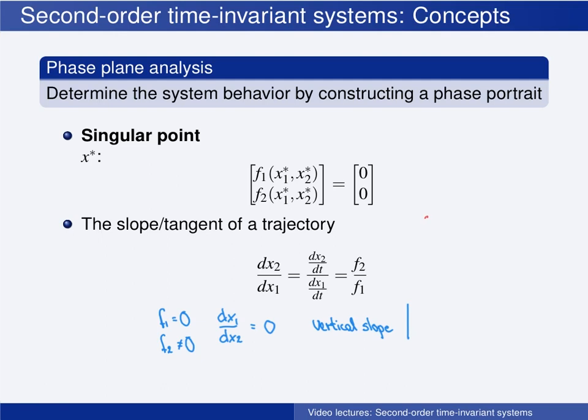If f1 is zero and f2 also is zero, then the slope of the trajectory is zero over zero and undetermined. And this is exactly what we have in an equilibrium point. Both f1 and f2 are zero. So the singular points representing equilibrium points in the phase plane are the only points where different trajectories can intersect.